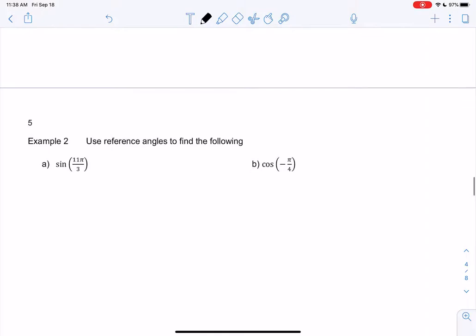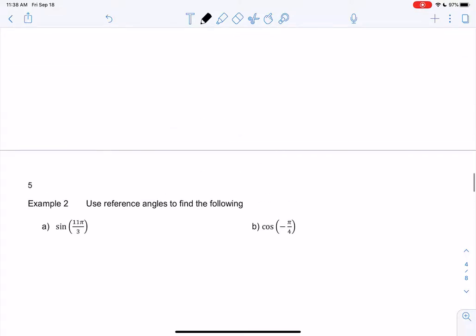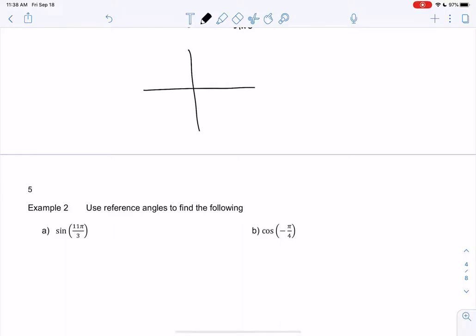And then the last one in the first quadrant, the last common one is 0, 1, right? That's at π over 2 or 90 degrees. So I highly recommend memorizing this, it's just going to make things be much more efficient in calculus rather than looking it up every single time. So let's find the following. And what we're going to do is we're going to find the reference angle in the first quadrant to find it.